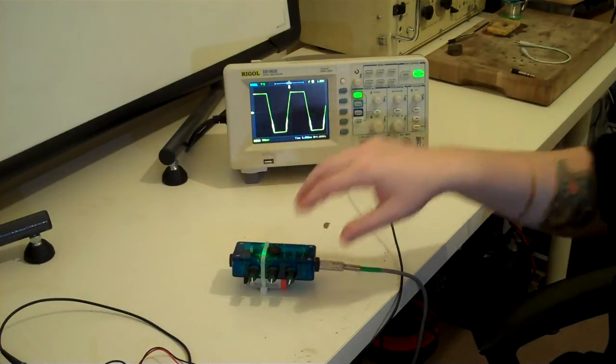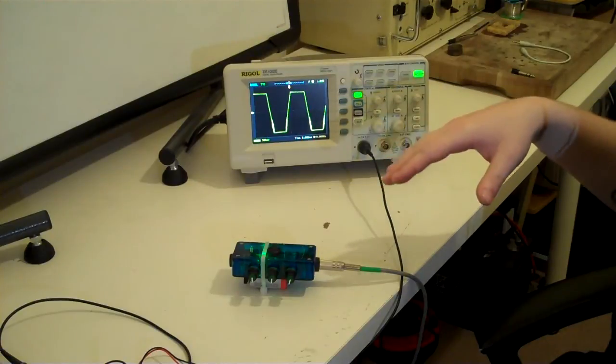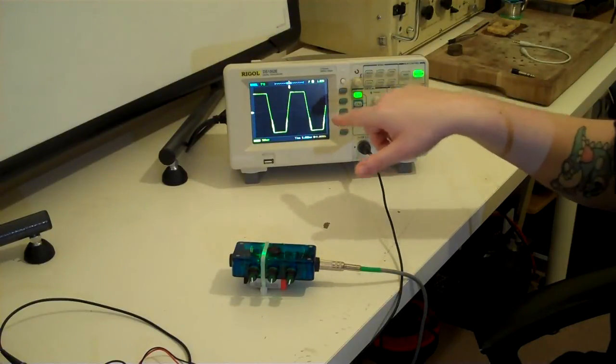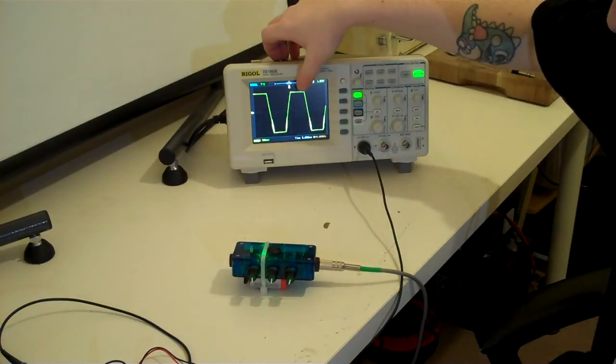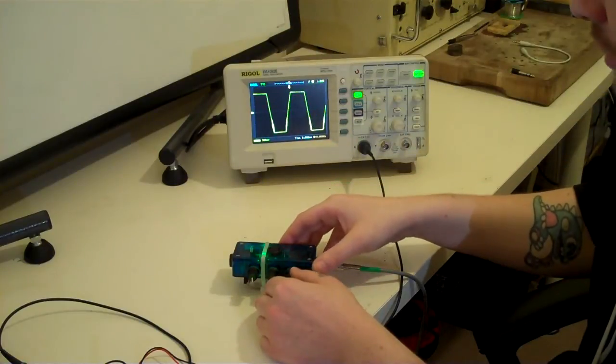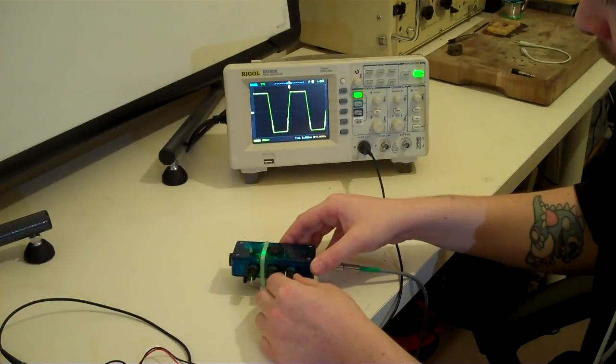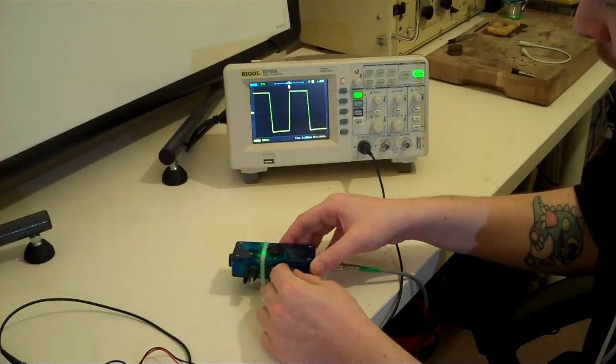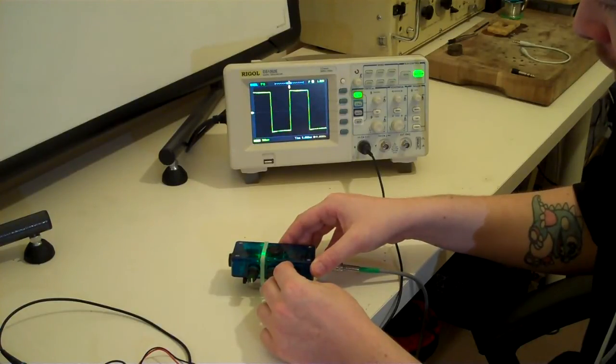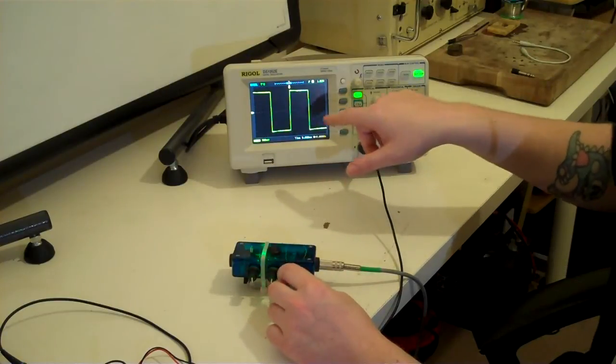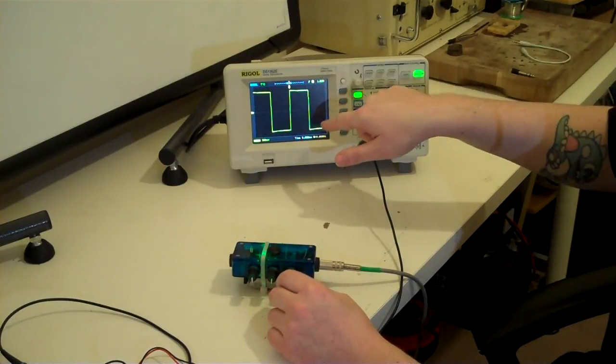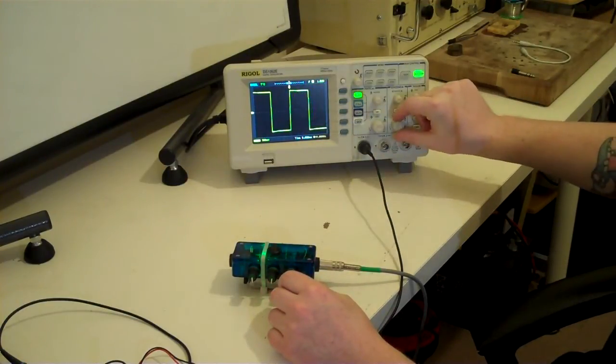So what you kind of perceive it as is a change in loudness. Rather than have that, I've started with my signal like this, and as I adjust the volume of the signal at the input of the op-amp, it squares off more and more and more. And now you can see that the waveform is almost entirely square.